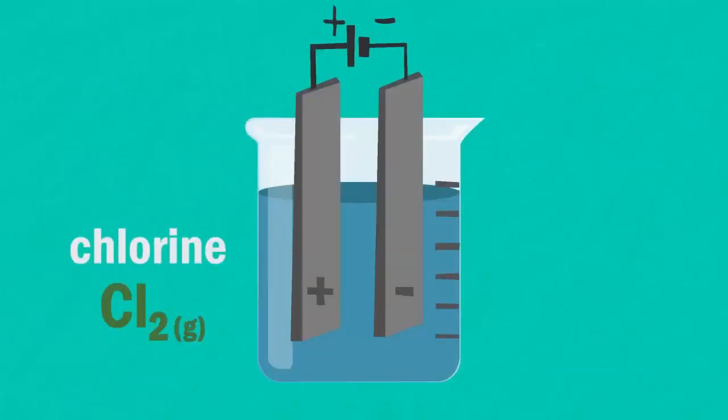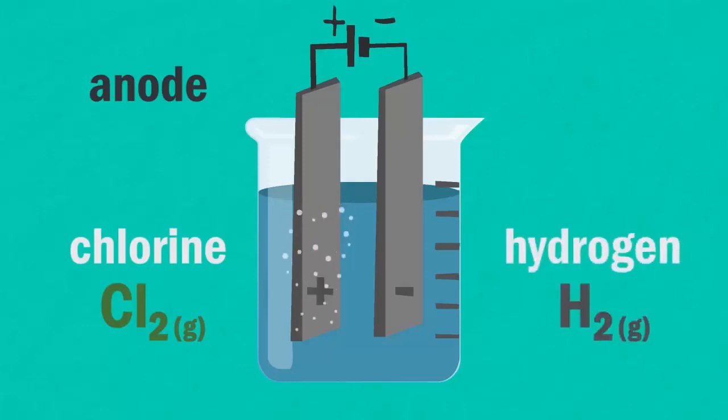The chlorine is formed at the anode, that's the positive electrode. And the hydrogen is formed at the cathode, that's the negative electrode. Did you get it right?